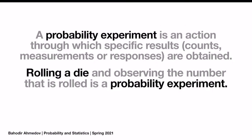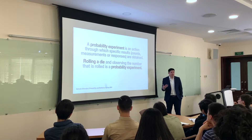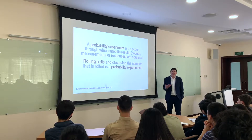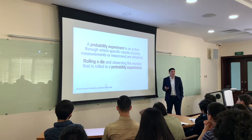A probability experiment is an action through which we are going to obtain specific results. Rolling a die and observing the number is a probability experiment. Or, for example, tossing a coin and getting heads or tails is a probability experiment. Or we can figure out another type of more realistic probability experiments.